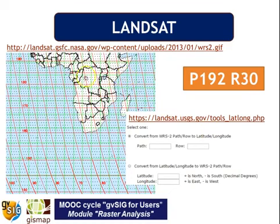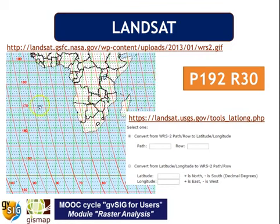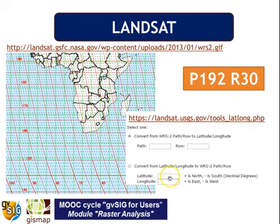Landsat images are organized using internal coordinates called path and row. You can see a map of the different path and row combinations. For example, a single image can be defined by its path and row — in this case, for example, 170 and 60. When you don't know the path and row, you can use a website to convert latitude and longitude coordinates to path and row, so you will know which path and row corresponds to your given coordinates.